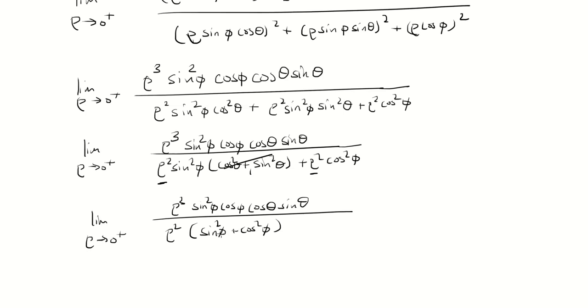So then again, sine squared plus cosine squared is one, so the bottom just turns into rho squared. But I have rho cubed over rho squared, which is just rho. So I'm left with rho times sine squared phi cosine phi cosine theta sine theta.